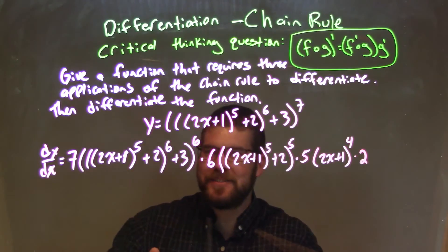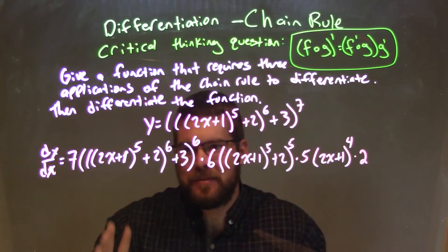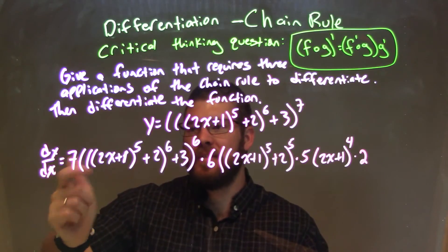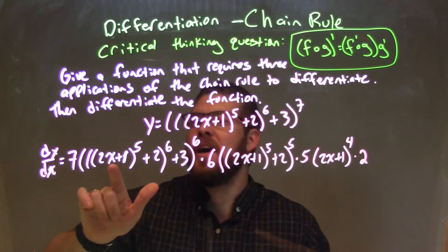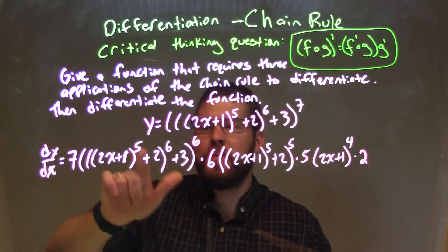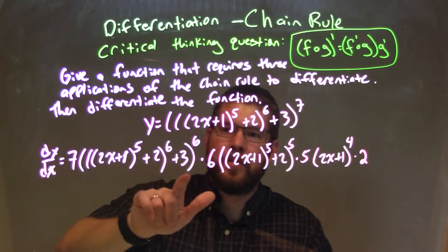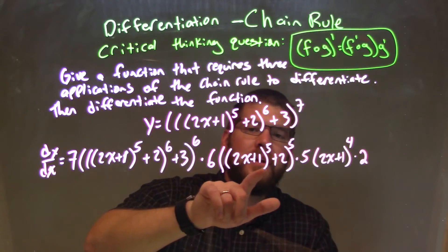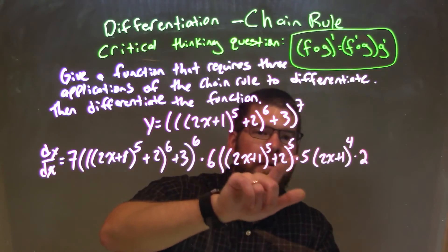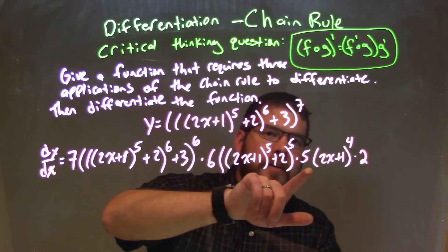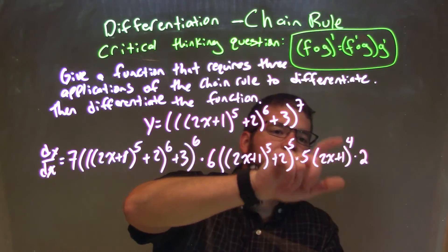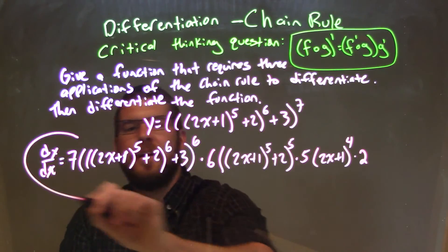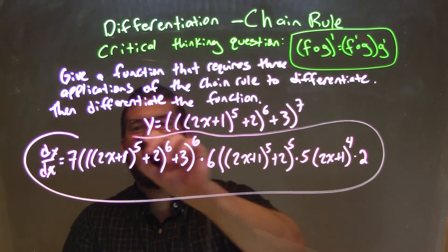We have our final answer. You probably can simplify this a little bit, but I'm okay with what it is. So dy/dx equals seven, triple parentheses: (2x + 1) to the fifth power, plus two to the sixth power, plus three, to the sixth power — times six, double parentheses: (2x + 1) to the fifth power, plus two to the fifth power — times five times (2x + 1) to the fourth power, times two. We've applied the chain rule three times in this one final big problem.